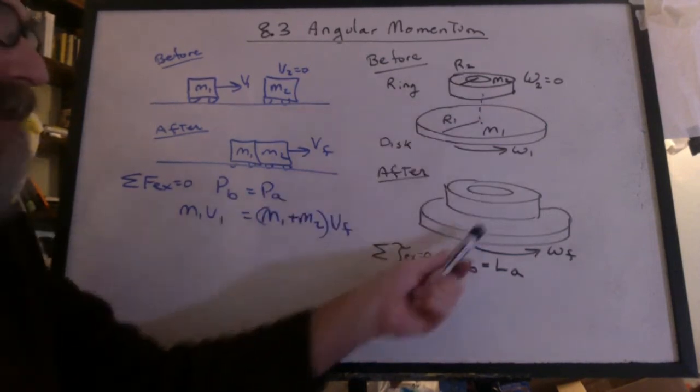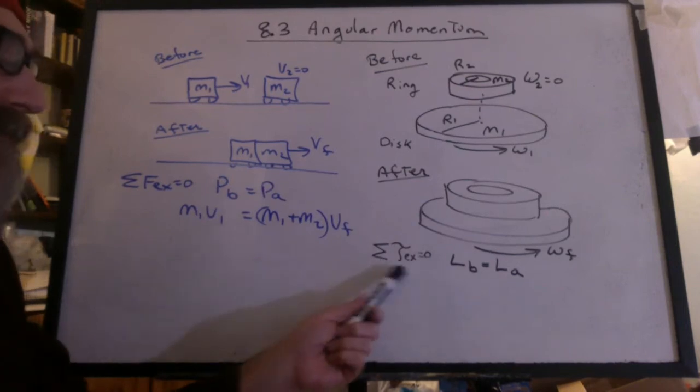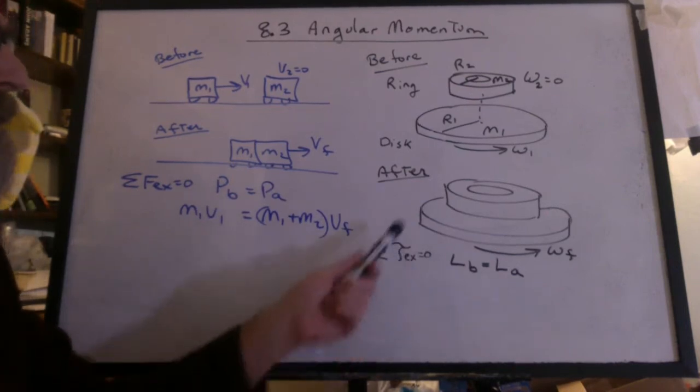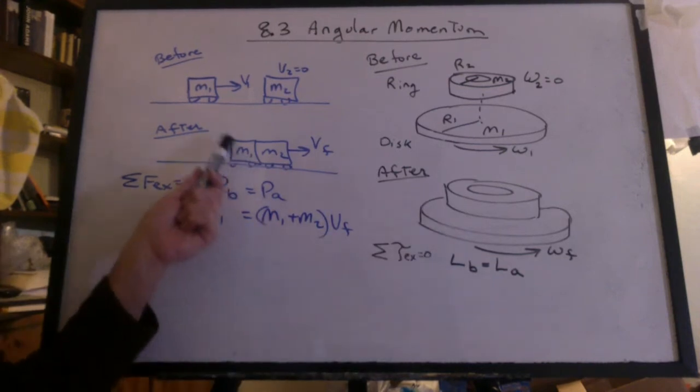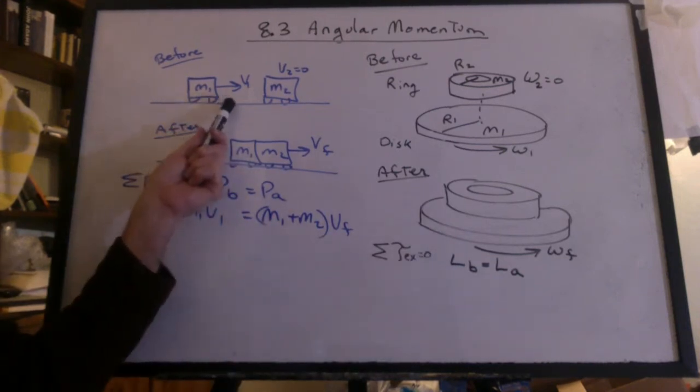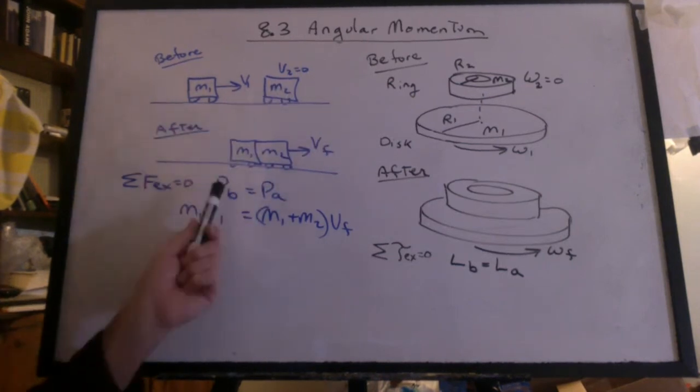We have to mount this on a frictionless turntable to allow it to rotate without any external torques. Will there be an internal torque? Sure. Just like there was internal forces. This cart slowed down and this cart sped up. It was an internal force that caused that to happen.